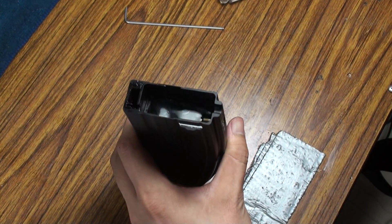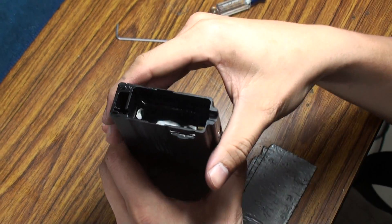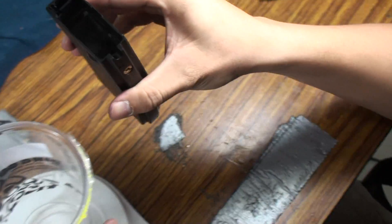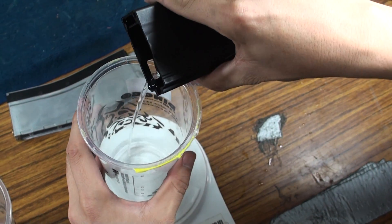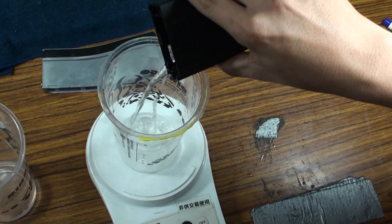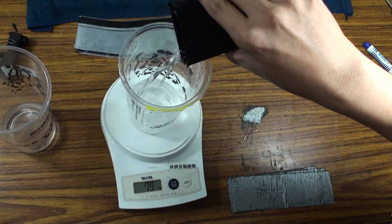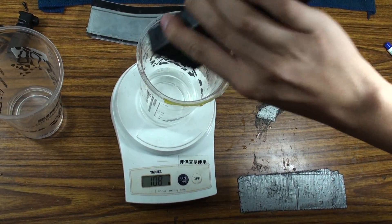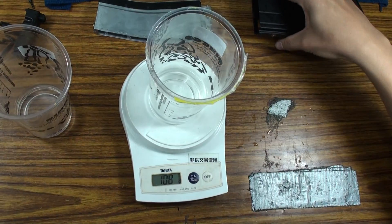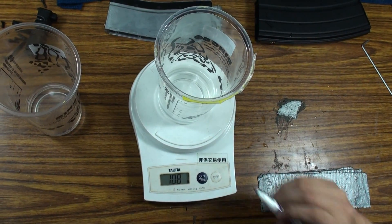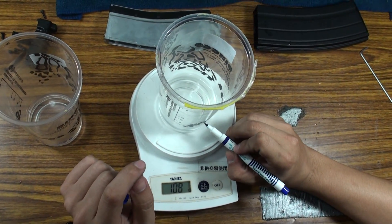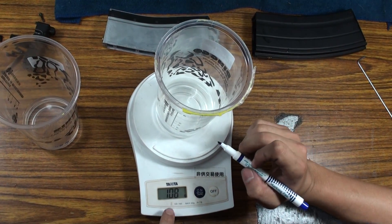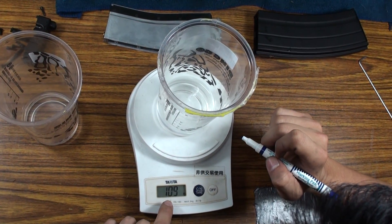For the new version magazine, it's easier to fill the water. Now we put all the water inside. I draw the line right here and it shows about 189 grams.